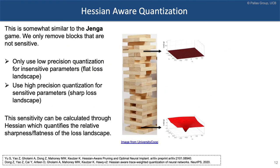How can we set the precision for each kernel without ad-hoc methods? The idea is to look at which layer is sensitive and which is not — similar to the Jenga game. When removing blocks in Jenga, we only remove blocks that are not sensitive. We'd never remove a block that's carrying a lot of weight, but we'd remove one that's not carrying much.